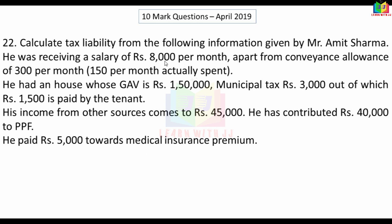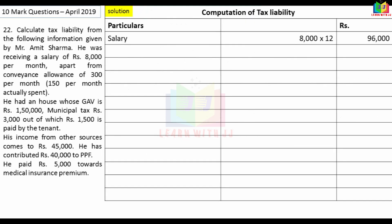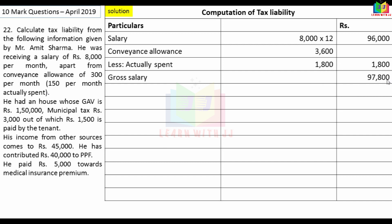Salary computation: Rs.8,000 per month into 12 = Rs.96,000. Conveyance allowance: Rs.300 into 12 = Rs.3,600. Actual spend: Rs.150 into 12 = Rs.1,800. Taxable conveyance allowance: Rs.1,800. Gross salary: Rs.97,800. Standard deduction of Rs.50,000 claimed. Net taxable salary: Rs.47,800.